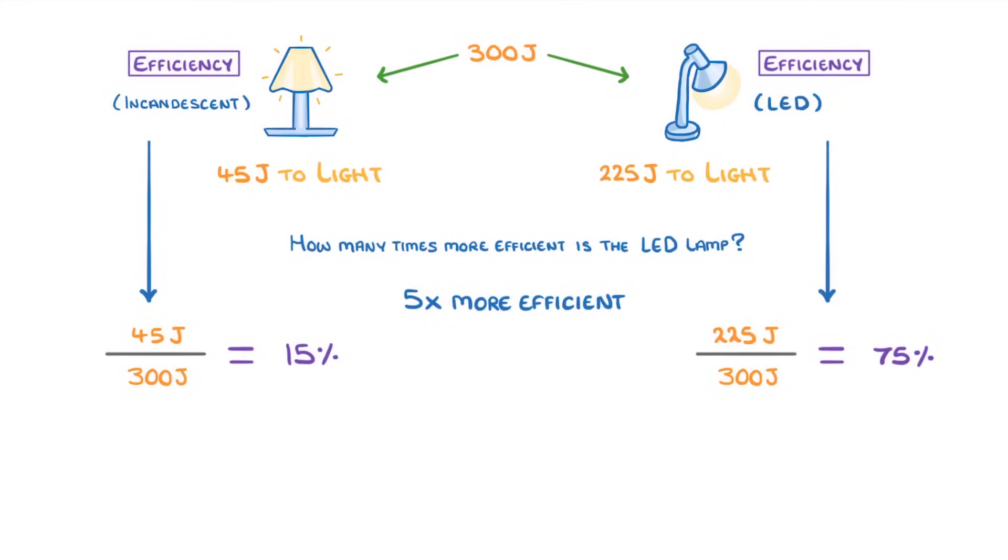When calculating efficiency, one common mistake is getting the division wrong. You should notice this because you'll get a value bigger than 1 or bigger than 100%. In our example, you'd get 1.33 or 133%, which is impossible because it implies you got more energy out than you put in. Remember the conservation of energy principle: energy can only be transferred, never created or destroyed.